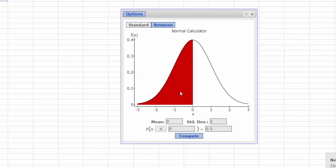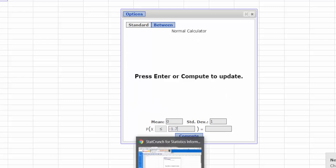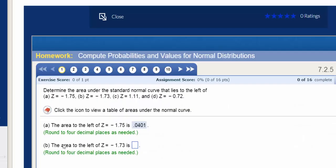And I believe we were asked to find the area to the left of negative 1.73. I just want to double check that. Yeah, right, the area to the left of negative 1.73.